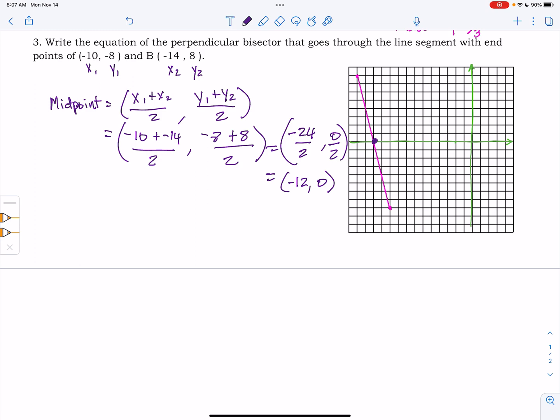Now, in order to find the equation of a line, we need a point and we need a slope. So we do have this line here. We don't have the slope yet, but we can find it using the equation for slope.